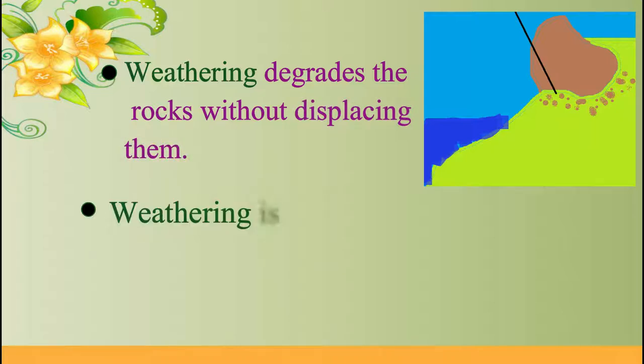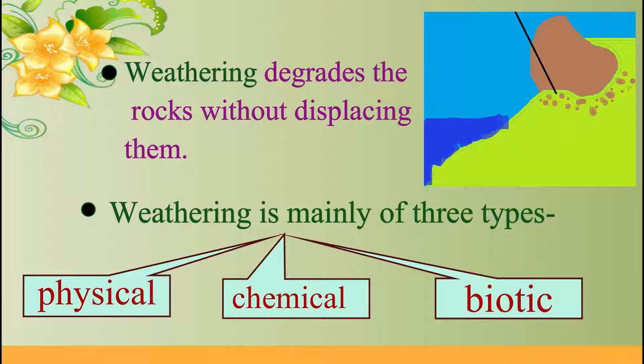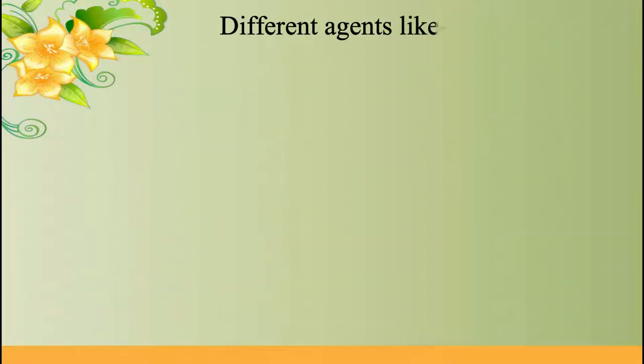Weathering is mainly of three types: physical weathering, chemical weathering, and biotic weathering. Different agents like wind...